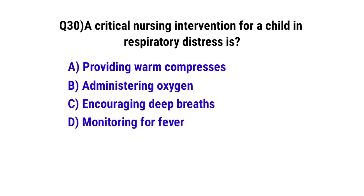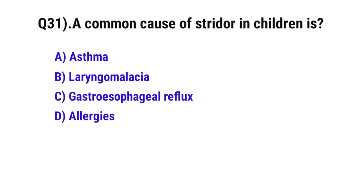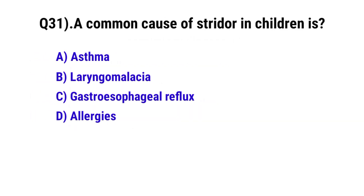Question 30: A critical nursing intervention for a child in respiratory distress is — the correct option is B: Administering oxygen. Question 31: A common cause of disorder in a child is — the correct option is B: Laryngomalacia.